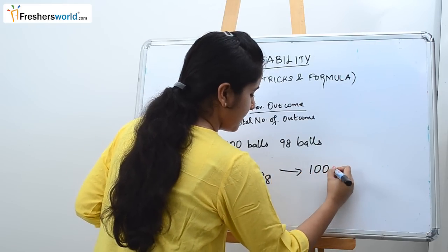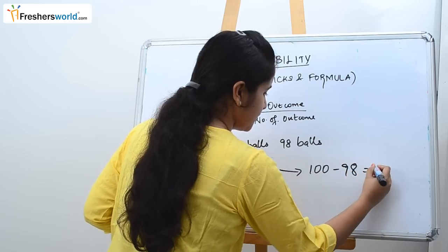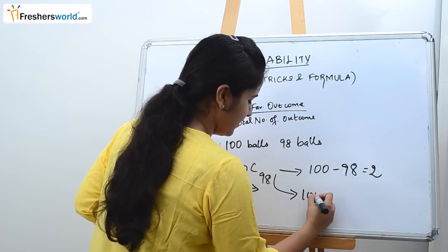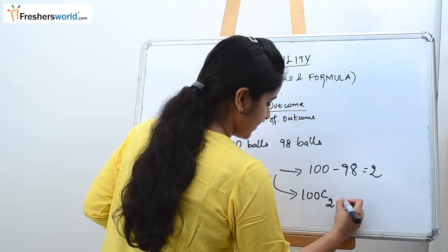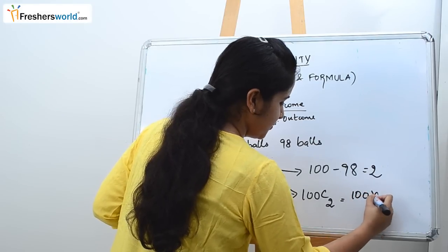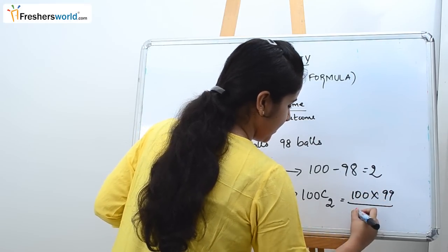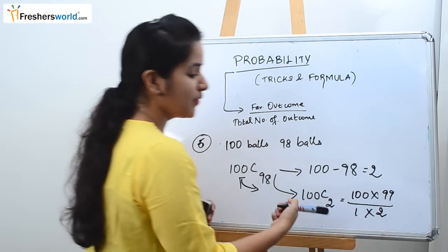What you have to do is subtract these two. 100 minus 98 which is 2. So you can write it as 100C2 which is 100 into 99 divided by 1 into 2. You can reduce this.